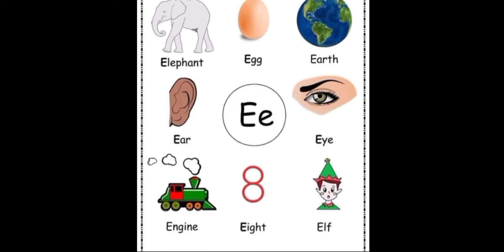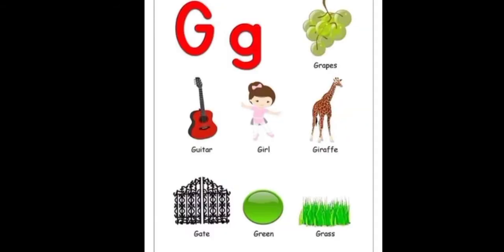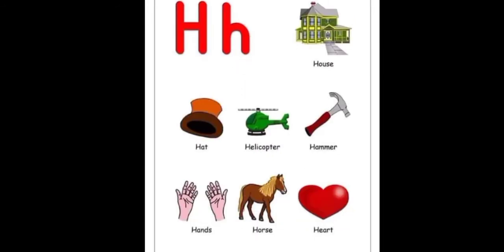E: engine, eight, elf. F: football, flower, fireworks, fire, flower, fence. G: grapes, guitar, girl, giraffe, gate, green grass. H: house, hat, helicopter, hammer, hands, horse, heart.